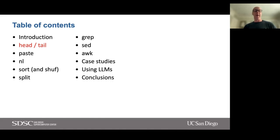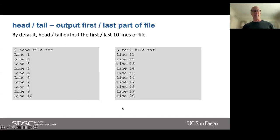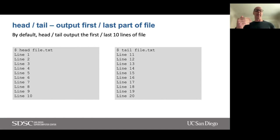We're going to jump in and start discussing these tools, beginning with what I think are the simplest and going from simplest to more complex. We'll start with head and tail — these are Linux utilities used to output the first or the last part of a file. I'm going to guess that many of you have used head or tail already. By default, if you use head or tail, you're going to get the first 10 or the last 10 lines of a file. I have a file here called file.txt — if I do head I'm going to get the first 10 lines; the file simply has lines labeled line one, line two, line three, and so on.